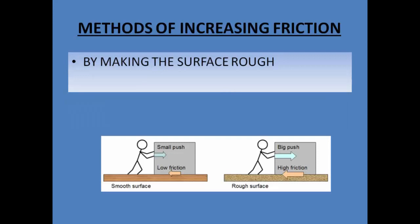What happens when we make the surface rough? As we have studied earlier, if a person is trying to move an object over a smooth surface, then the force of friction is less. Whereas, over a rough surface, the force of friction is very large and thus it is difficult to move an object. So, if we want to increase the friction, we need to use a rough surface rather than a smooth surface.